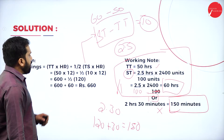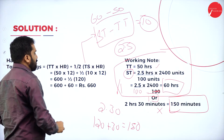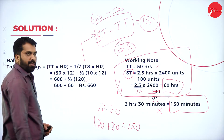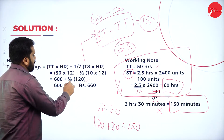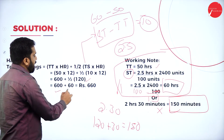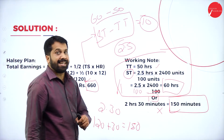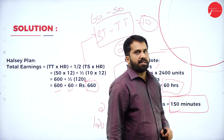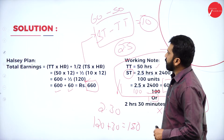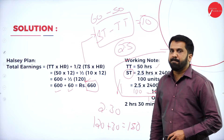Time saved is 10 hours, hourly rate is 12. So 10 × 12 = 120; half of 120 = 60. Time taken portion: 50 × 12 = 600. Total Halsey plan earning = 600 + 60 = 660. That is the answer for the Halsey plan.